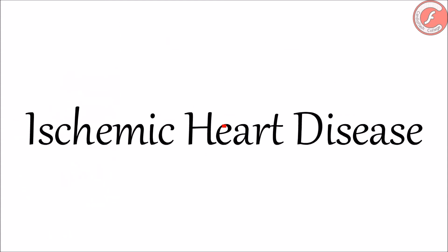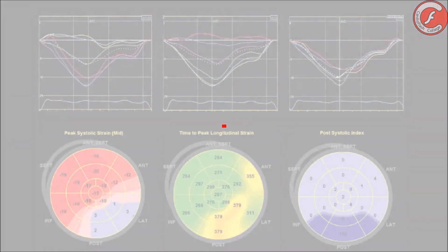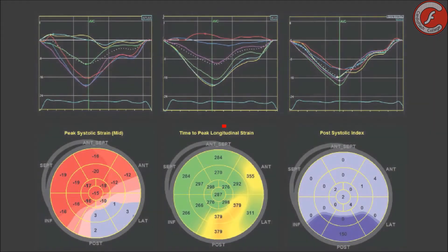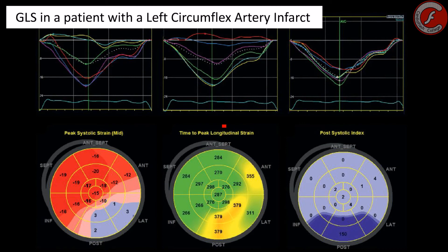Ischemic heart disease. As you know, typical changes of the ischemic cascade begin in the endocardium, which is why the global longitudinal strain can be helpful in the study of patients with chest pain, although its value in real clinical practice is modest. However, in patients with revascularized myocardial infarction, a decrease of the global longitudinal strain can predict negative remodeling, transmural necrosis, and adverse cardiovascular events in the long term.